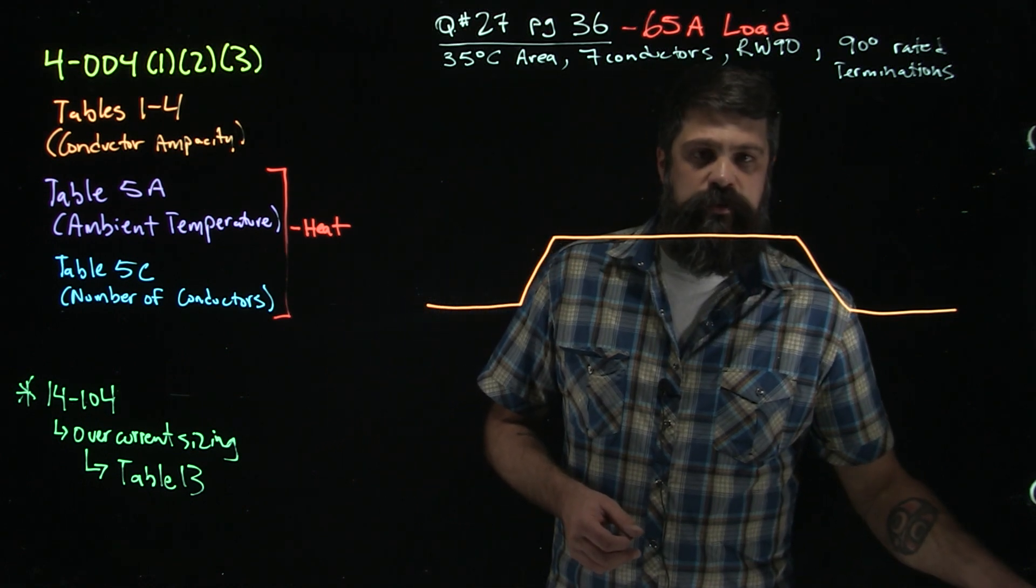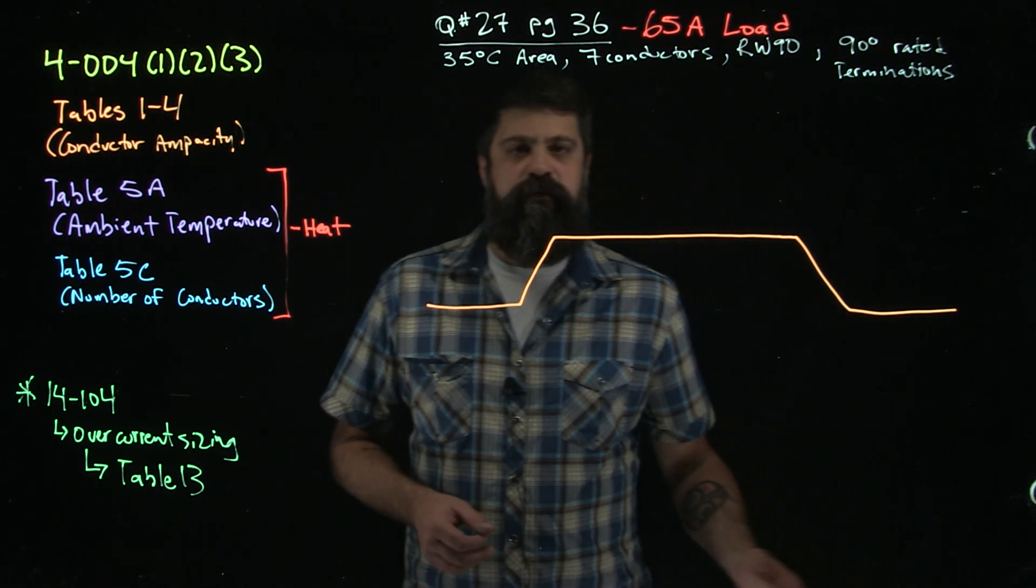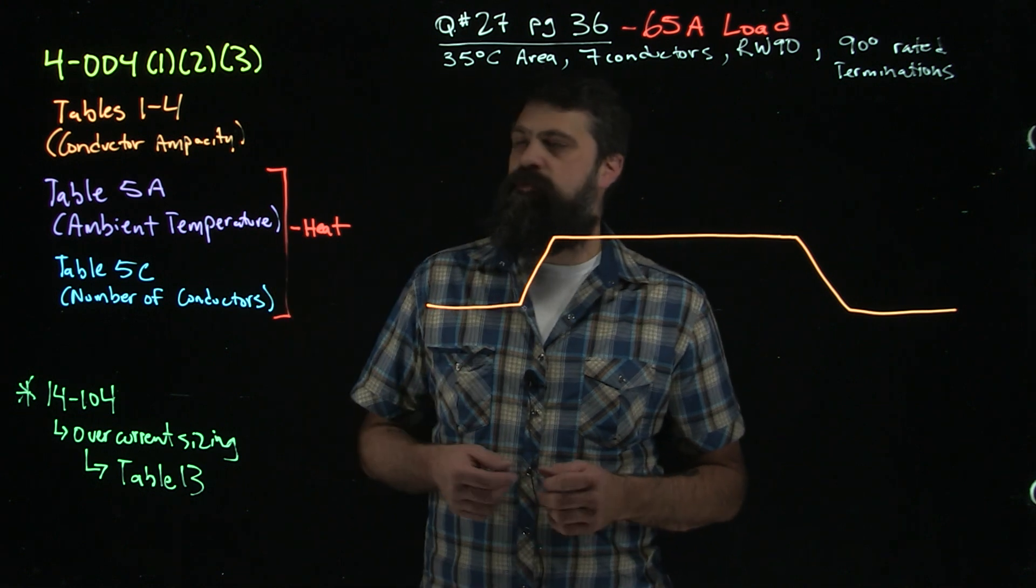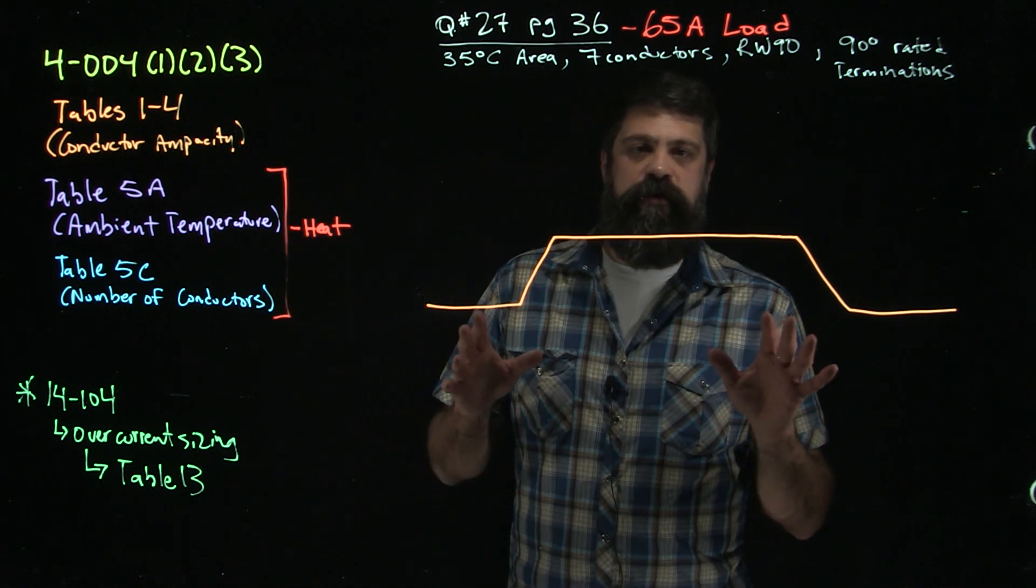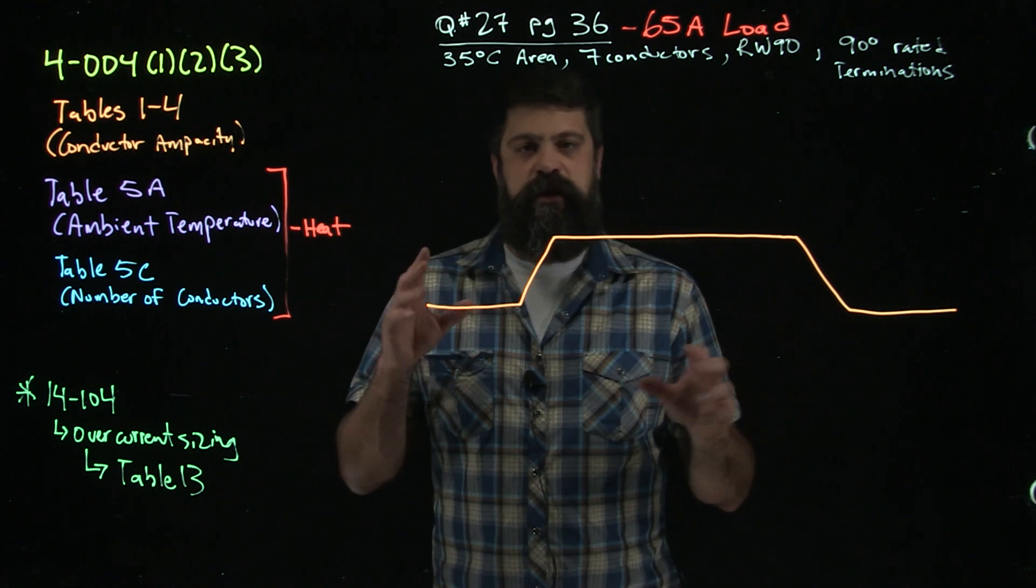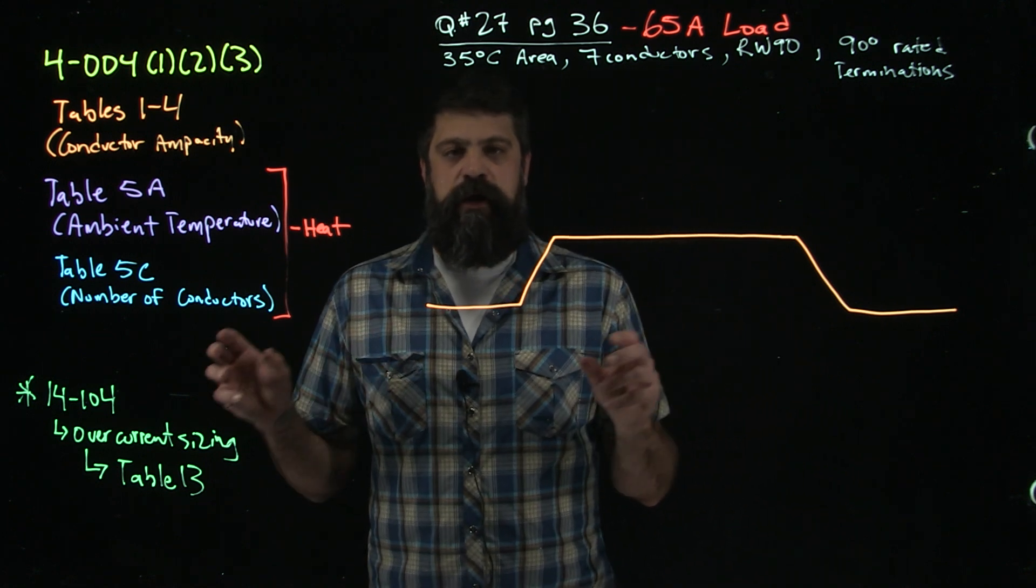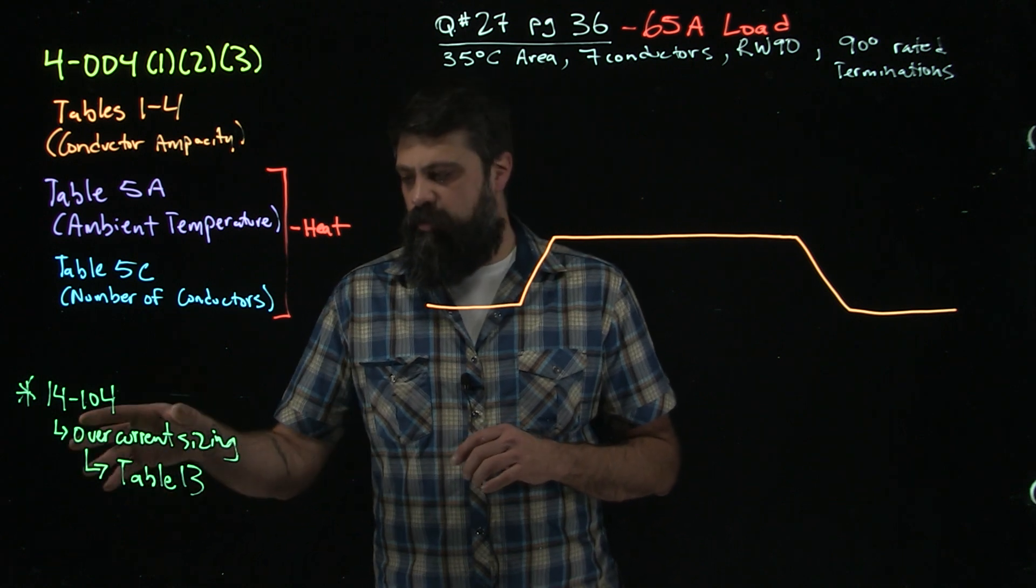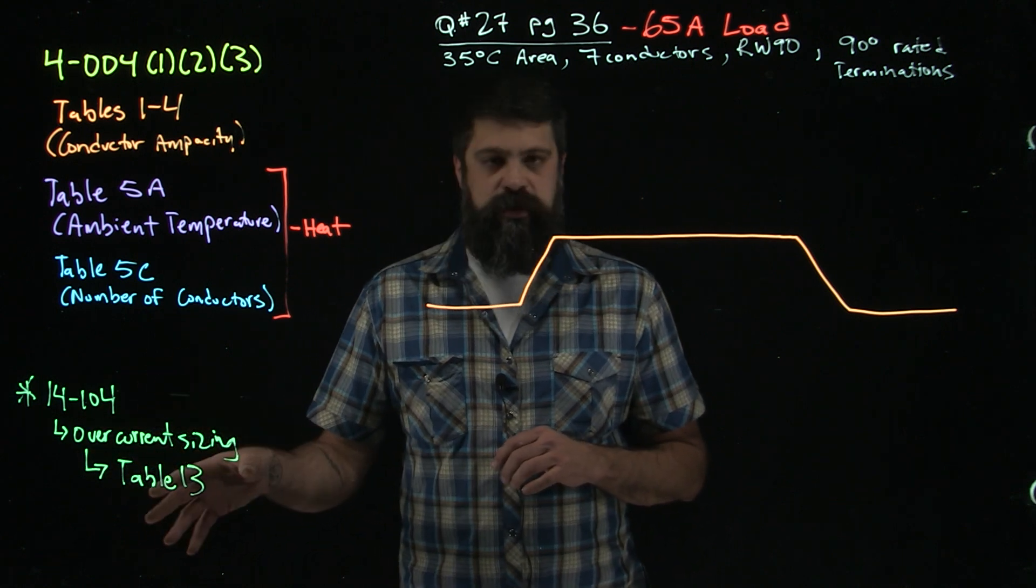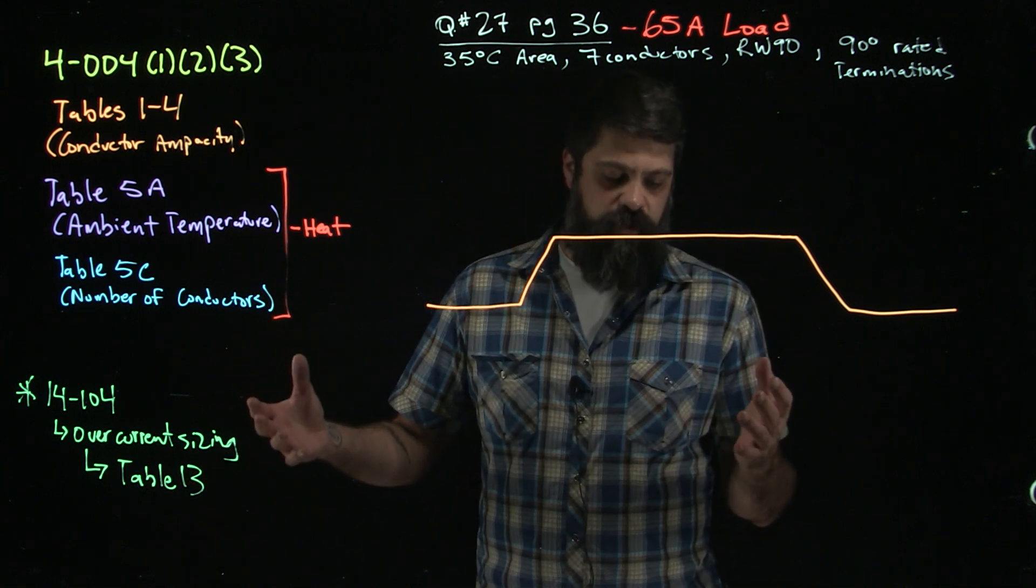Hey everybody, I just want to go through another example of wire sizing from rule number 4004. This time we're going to throw a couple different things into it to get our feel for tables 1 to 4. We're also going to size a breaker based on rule 14104. Rule 14104 tells me how to size an overcurrent, then takes me to Table 13 where I pick my overcurrent out.